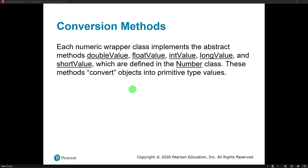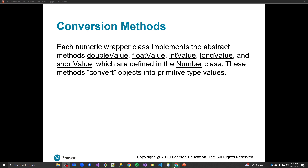We also have doubleValue, floatValue, intValue, longValue, and shortValue, which are defined in the Number class. Each of these wrapper classes inherits those from the Number class — it's the parent class. Because they are specialized numbers, they all have doubleValue, floatValue, intValue, and longValue built in. They convert objects into their primitive types.